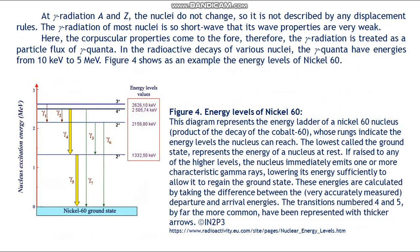The gamma radiation of most nuclei is so short in wavelength that its wave properties are very weak. Here the corpuscular properties come to the fore; therefore gamma radiation is treated as a particle flux of gamma quanta. In the radiative decays of various nuclei, the gamma quanta have energies from 10 keV to 5 MeV. Figure 4 shows, as an example, the energy levels of nickel-60.